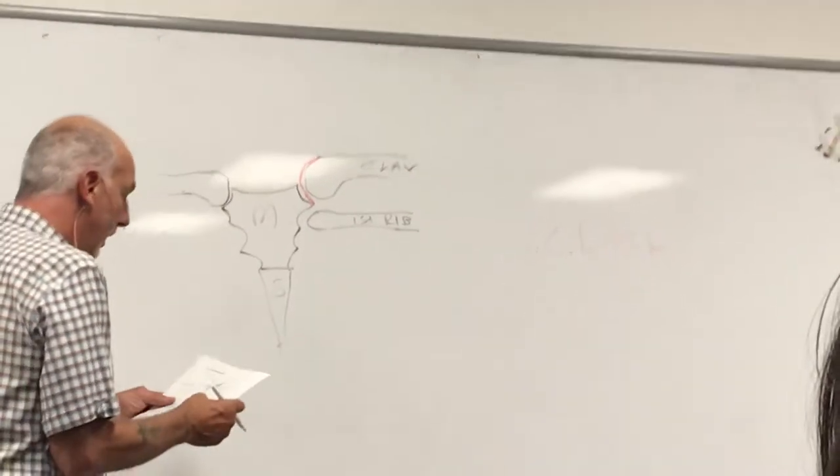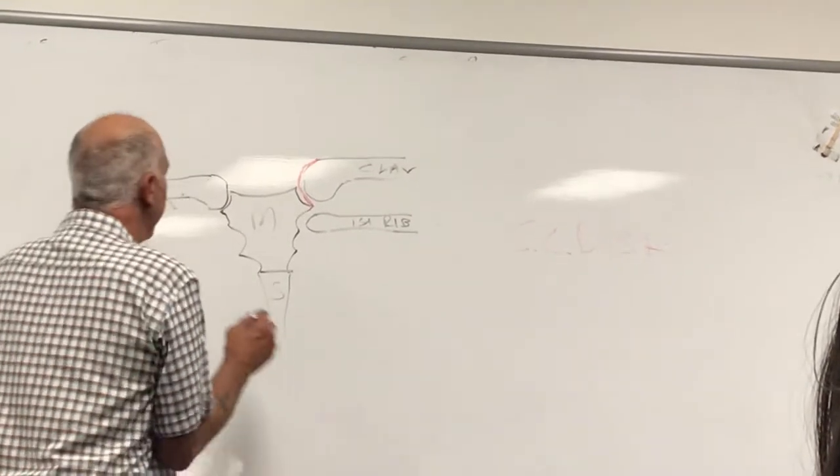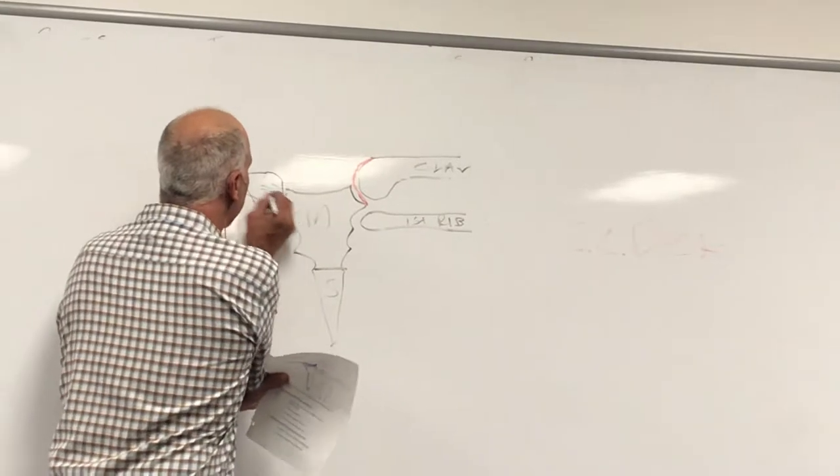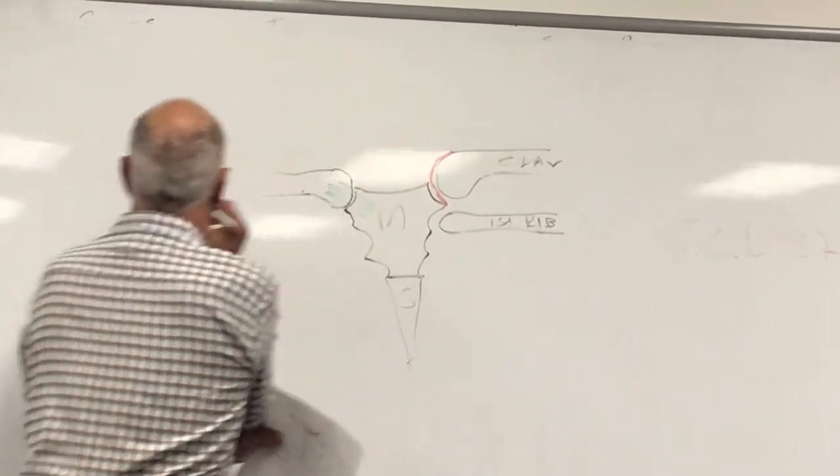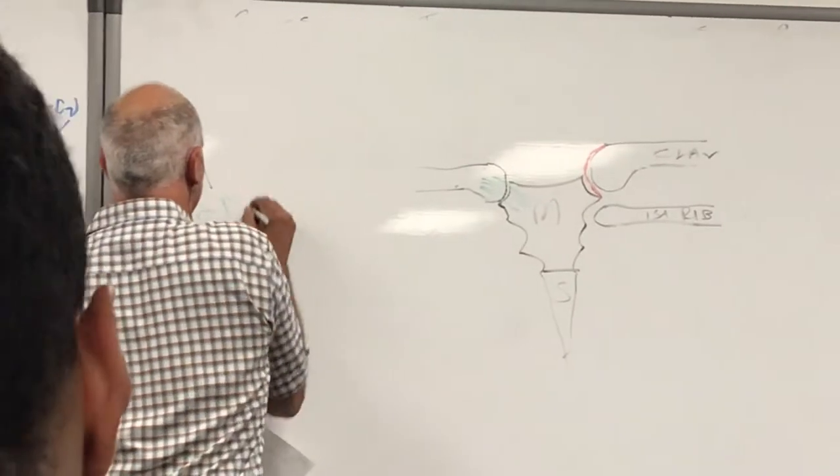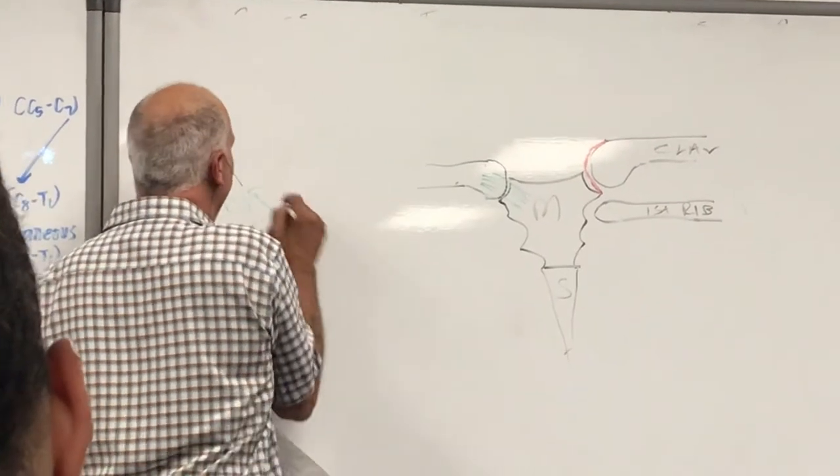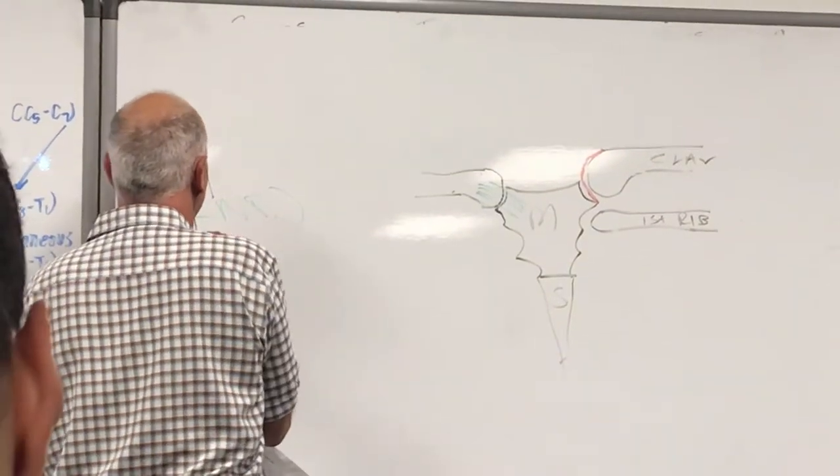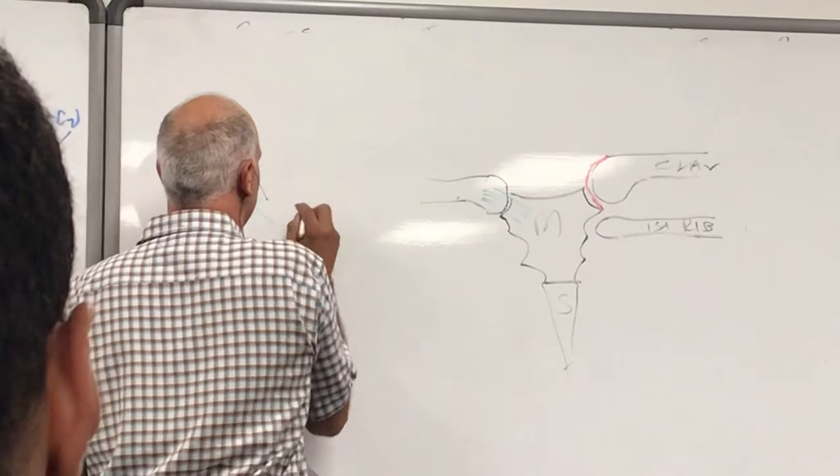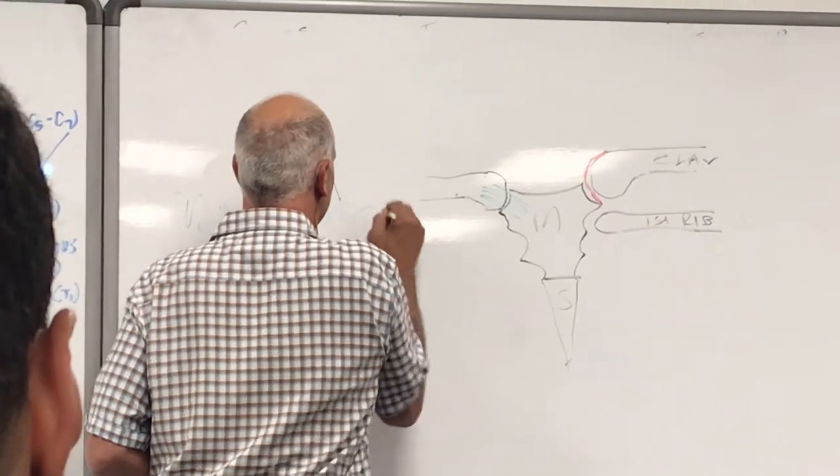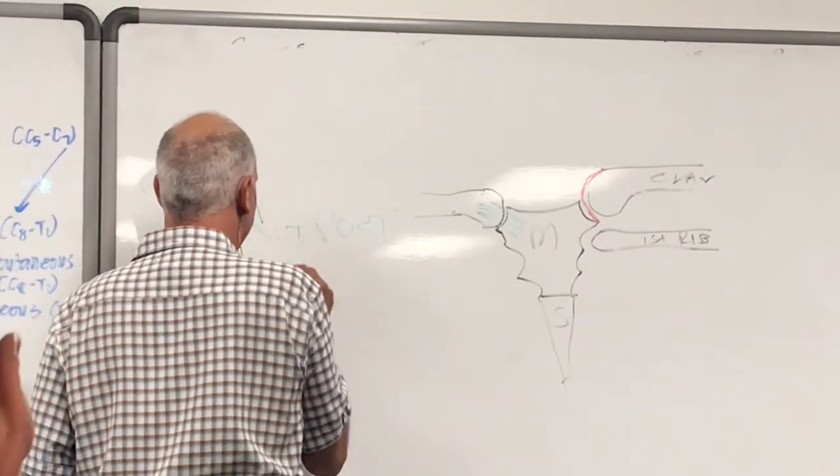The second ligament I want to draw are the anterior and posterior SC ligaments. Here, all we're looking at is the anterior, but we know there are posterior AC ligaments.